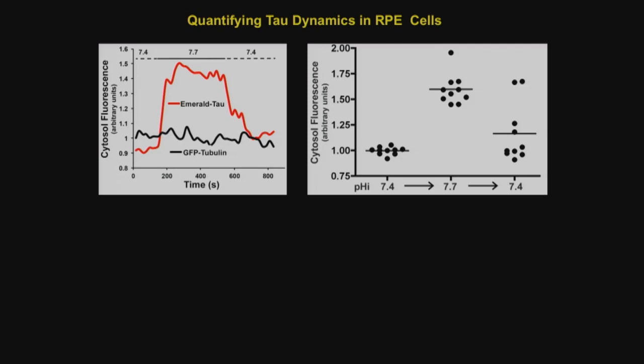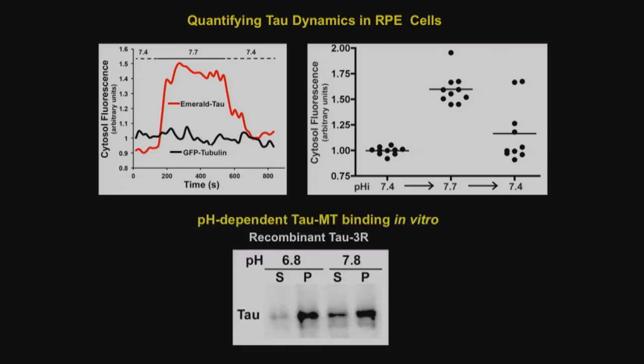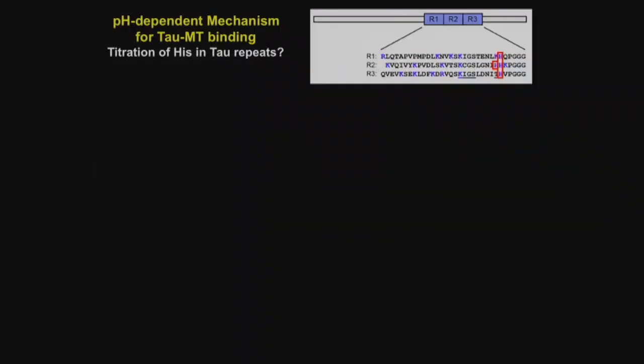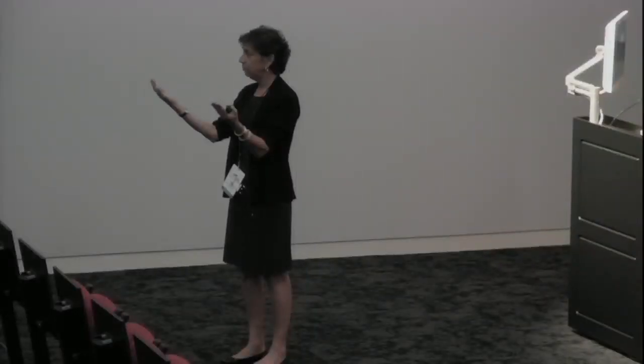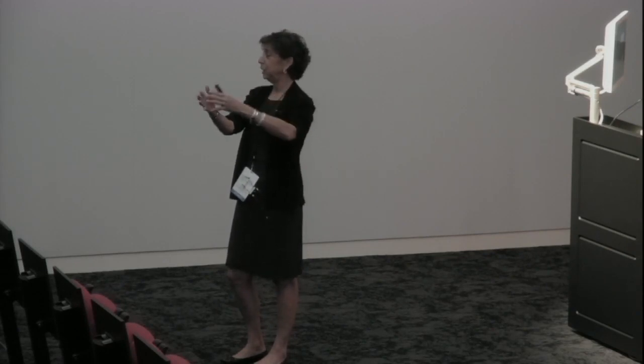What's the mechanism? In each tau repeat — and even in R4 — there is an invariant histidine. Tau binds to microtubules through an electrostatic interaction: tau is very positively charged and microtubules are very negatively charged. We thought these histidines might be titrating — when we increase pH they become neutral, and tau falls off microtubules because you're decreasing the electrostatic interaction.